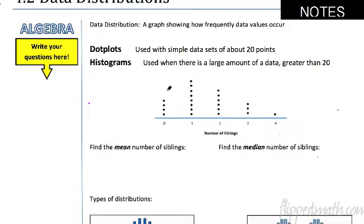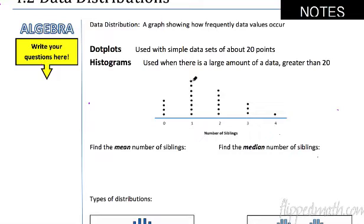Let's review how to do a dot plot. We have 'number of siblings' here. Above the zero, there are four dots — that means four people have zero siblings. Counting the dots above one: one, two, three, four, five, six, seven, eight. So eight people have one sibling.